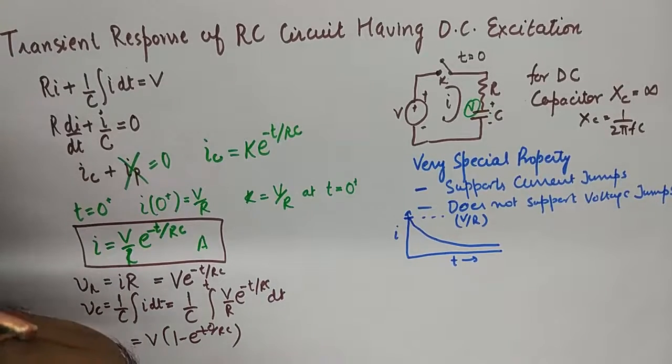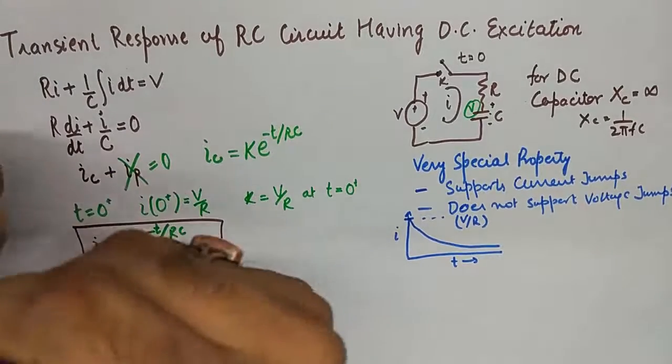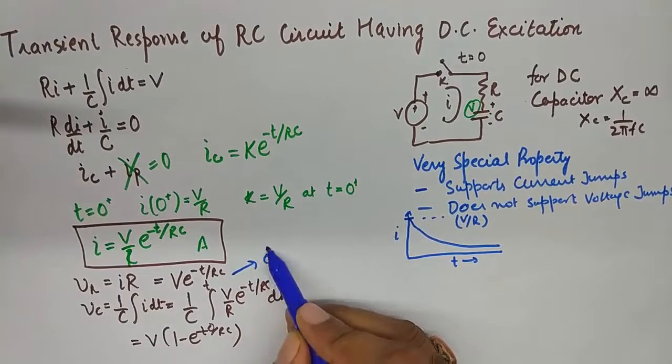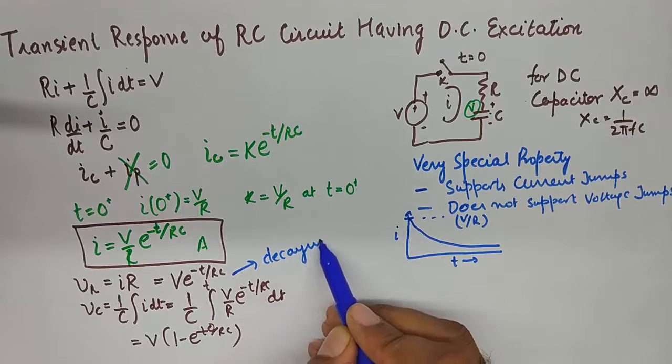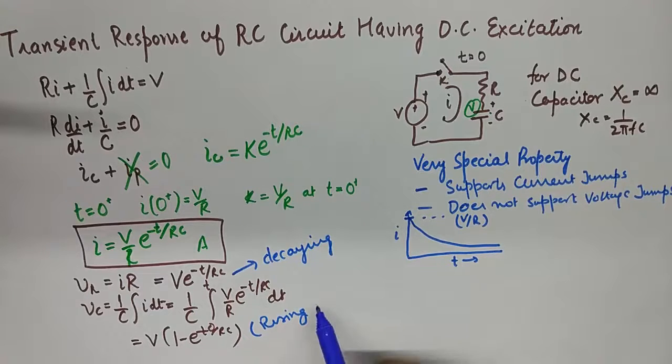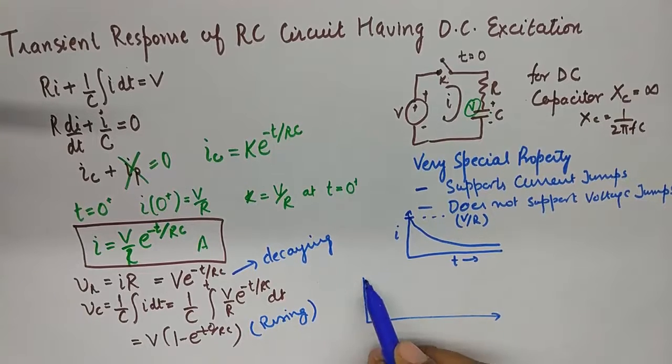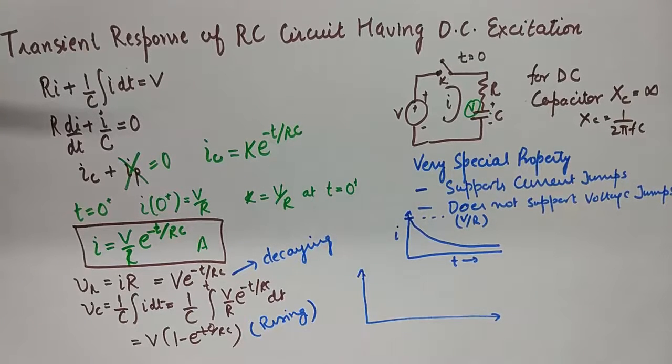Now observing these equations we know that VR is a decaying function. This is a decaying exponential. And this is a rising exponential function.